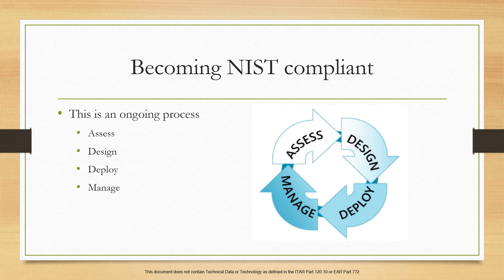Becoming compliant with NIST 800-171 is an ongoing process — it never ends. Starting at the beginning, you assess: evaluate your current state and what your environment looks like now. Step two is design: create the necessary changes and plan out what you need to change to be compliant. Step three is deploy: implement those changes you've designed. And then manage: continue to manage the system to maintain compliance. As shown in the graphic on screen, it is a recurring process — your process should evolve over time as you continue to implement new enhancements.